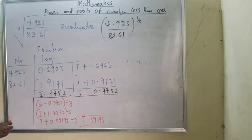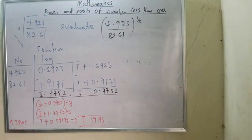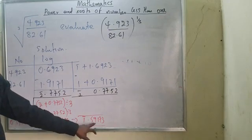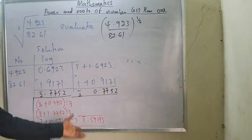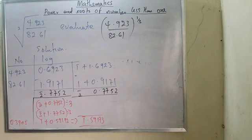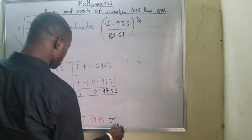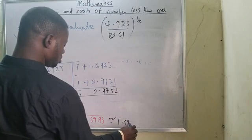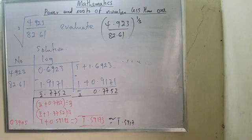Since I have bar 1.5917, that also implies bar 1 point 5917. When I find the antilog of this, it gives me 0.3905. That is my answer. To find the antilog, I look up 59 under column 1, difference 7, which gives approximately bar 1.5917.